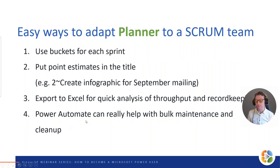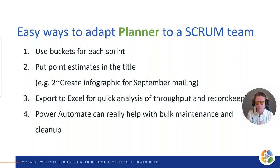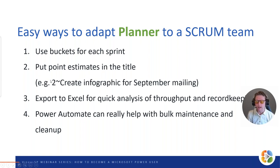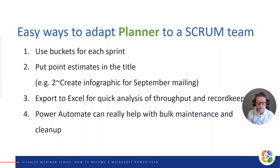For scrum teams specifically: use buckets for each sprint to make sprint planning easy and to roll tasks forward if needed. For estimating, I suggest putting story points in the task title using a number followed by a tilde character — for example '5~'. The reason is that when you export to Excel (tip number three), Excel makes it easy to separate those points into their own column with a couple of clicks, and then you can analyze velocity over time.